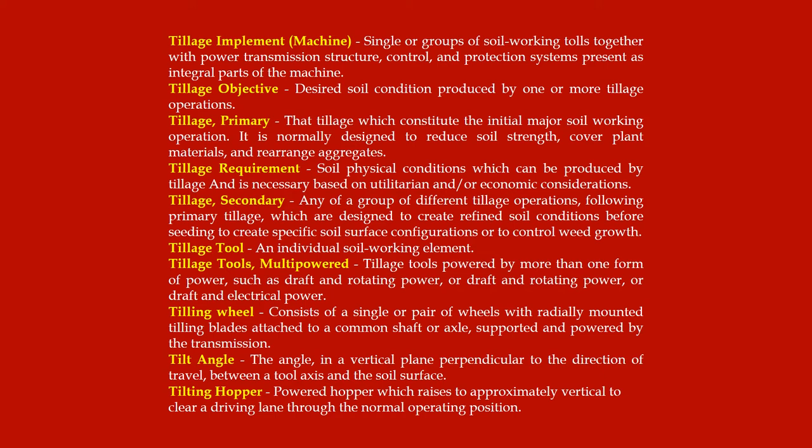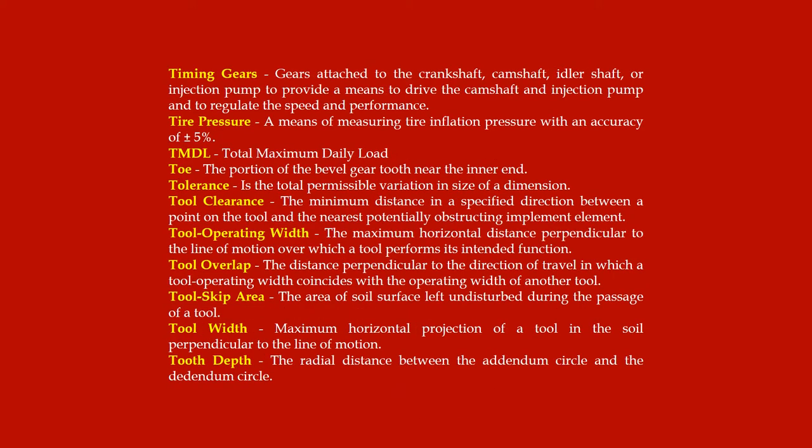Tilt angle: the angle in a vertical plane perpendicular to the direction of travel between a tool axis and the soil surface. Tilting hopper: a powered hopper which raises to approximately vertical to clear a driving lane through the normal operating position. Timing gears: gears attached to the crankshaft, camshaft, idler shaft, or injection pump to provide a means to drive the camshaft and injection pump and to regulate speed and performance. Tire pressure: the means of measuring tire inflation pressure with an accuracy of ±5%.